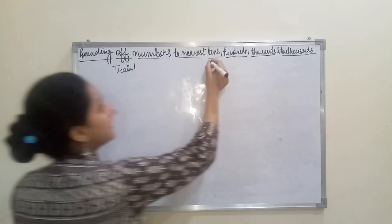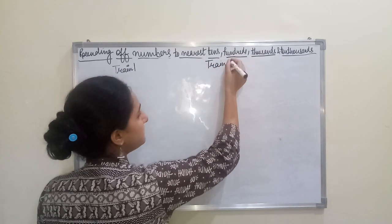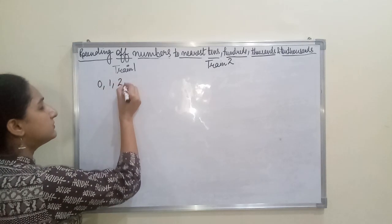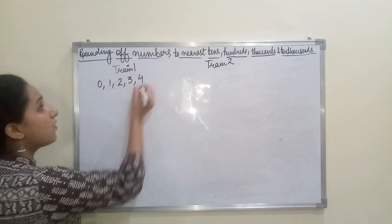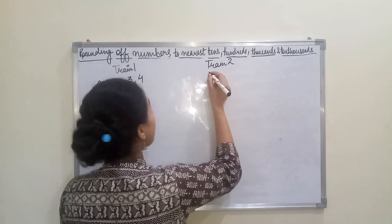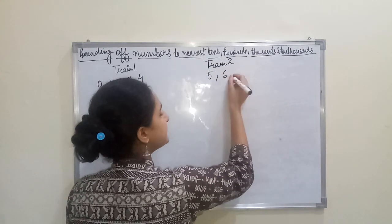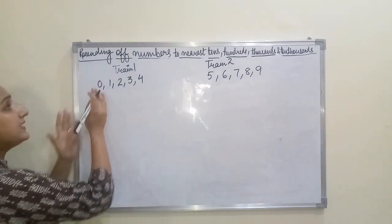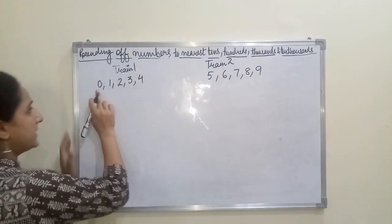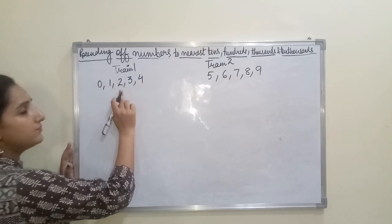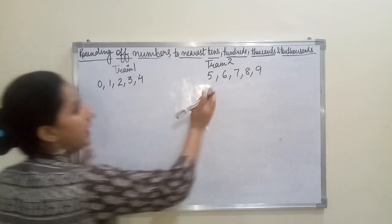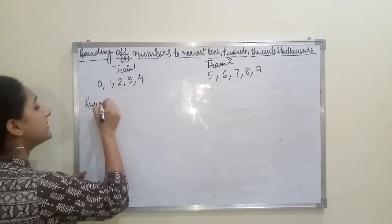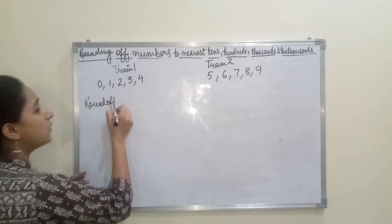I'm trying to teach you this concept in a very innovative way — with the Train One and Train Two concept. Train One has bogies zero, one, two, three, four. These are the names of the boxes. Train Two has five, six, seven, eight, and nine. Yeh trains hain, yeh trains ke naam hain. The whole concept of rounding off revolves around these two trains.